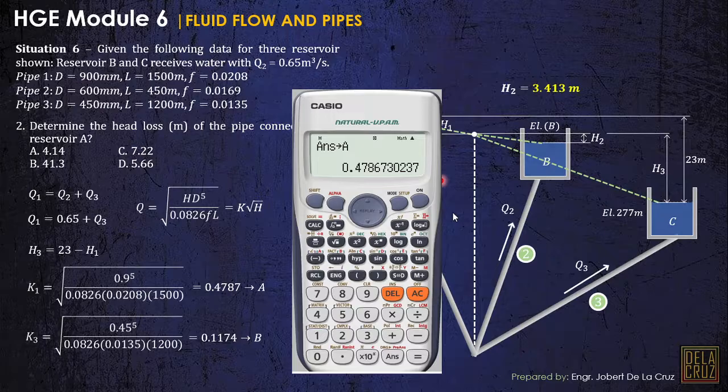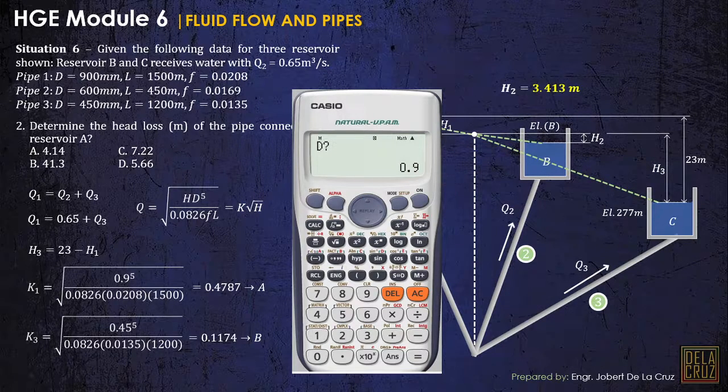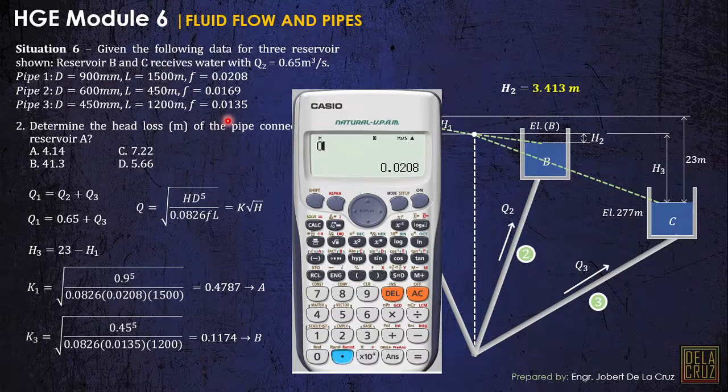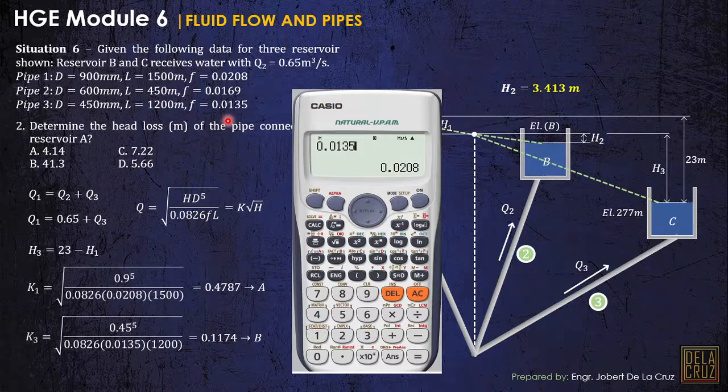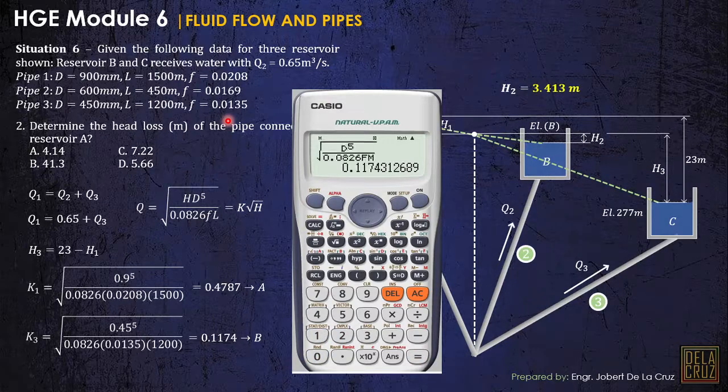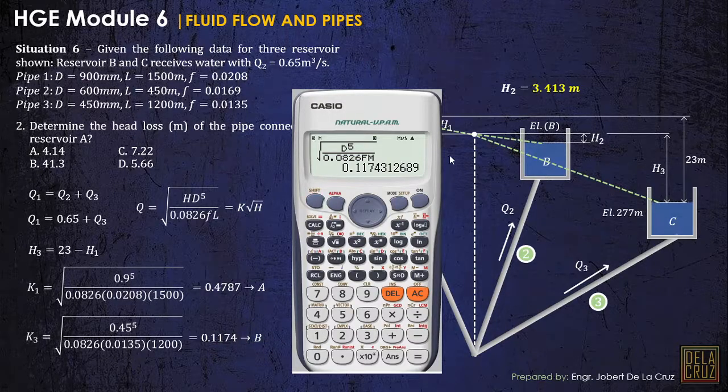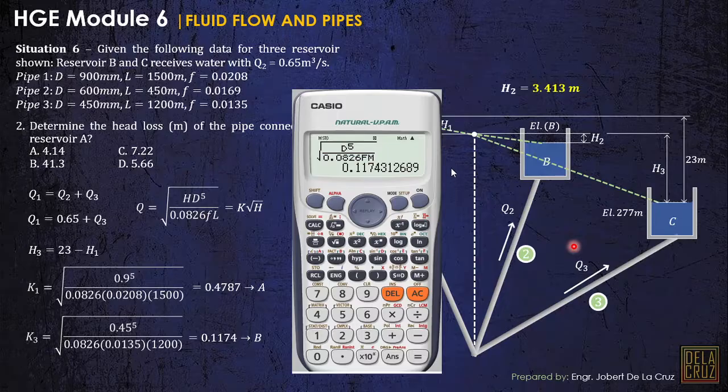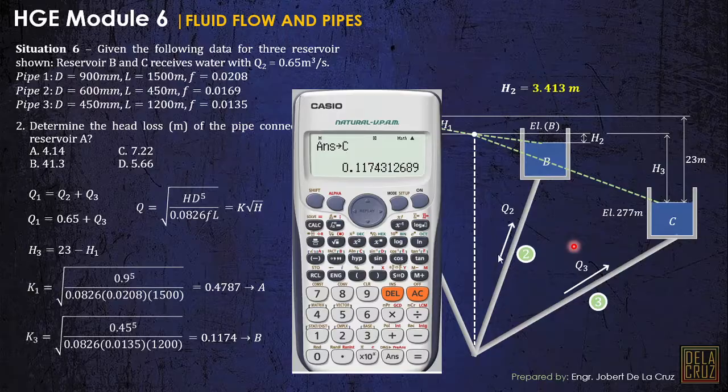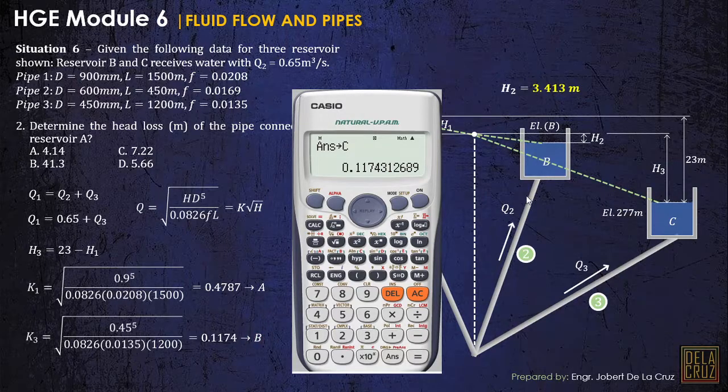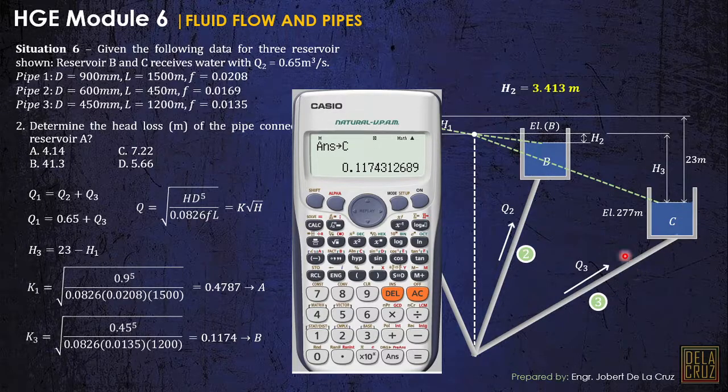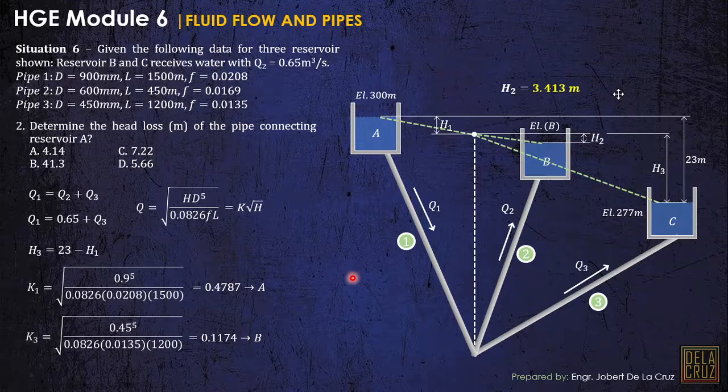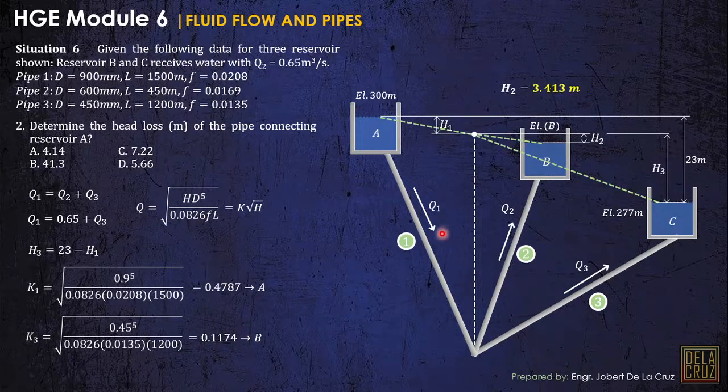The same approach, but here the diameter for pipe 3 is 0.45 meters. And the friction factor for pipe 3 is 0.0135. Then the length is 1200. So we have here the same value. Let us store this one to... actually, it's better to C, so it's not confusing. Because this is pipe C. Let me store this to pipe C. Shift store to C. So disregard this thing here. The constant for C or for pipe 3 is at variable C in the calculator.